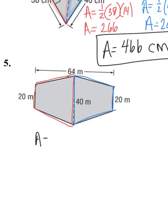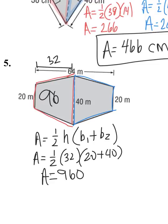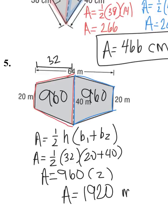So the area of a trapezoid is one half the height, base one plus base two. Well, what's the height here? Half of 64, this is 32. So the area of one trapezoid is one half times 32 times 20 plus 40. The area of one trapezoid is 960. But there's two of them. I have 960 here. I have 960 here. They have the exact same dimensions. So if I just multiply that times two, the area of the whole shape is 1920 meters squared.